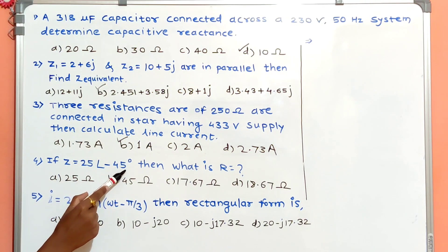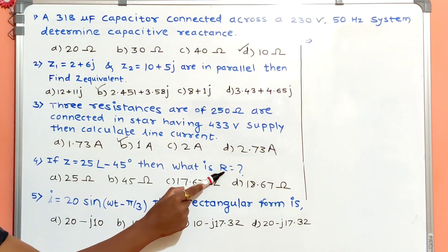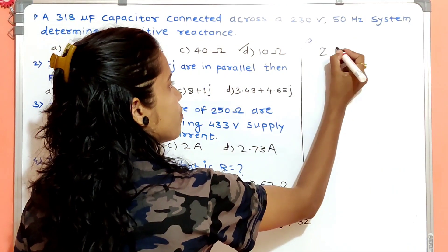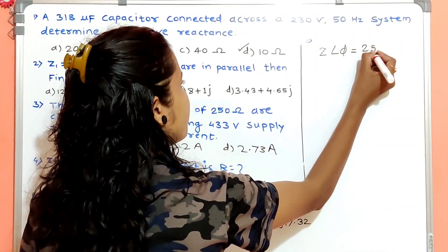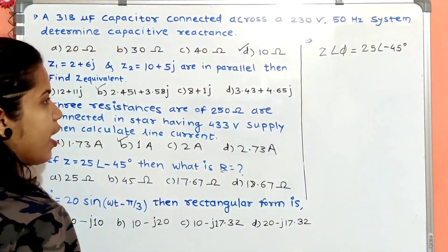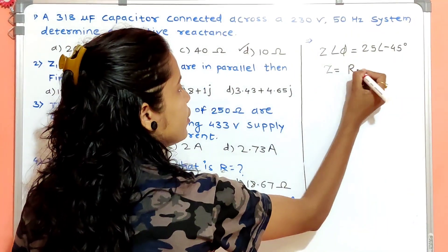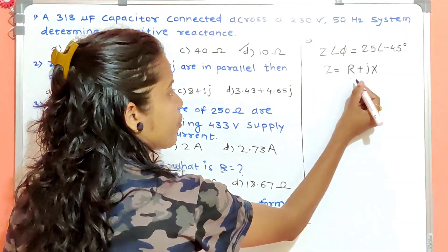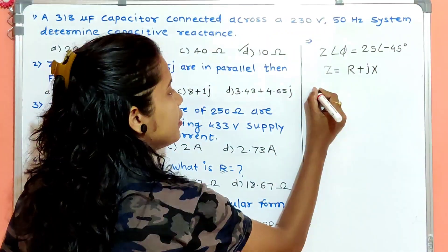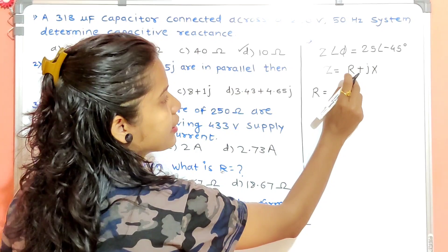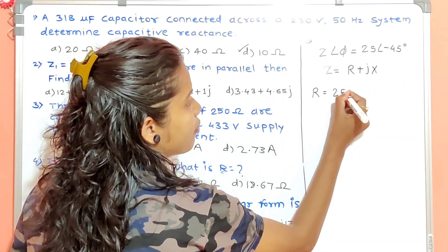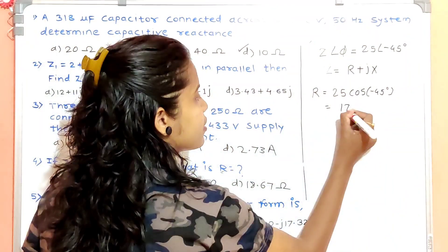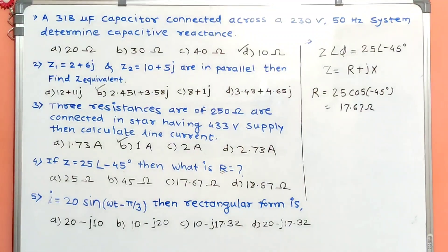Question four: if Z = 25∠−45°, what is R? This is polar form. The rectangular form of impedance is R + jX. Convert polar to rectangular: R is the X-component, so R = 25 × cos(45°) = 17.67 ohm. Answer is option C.